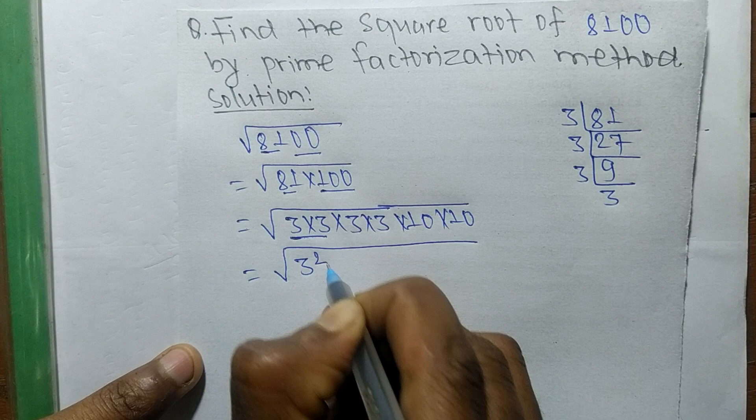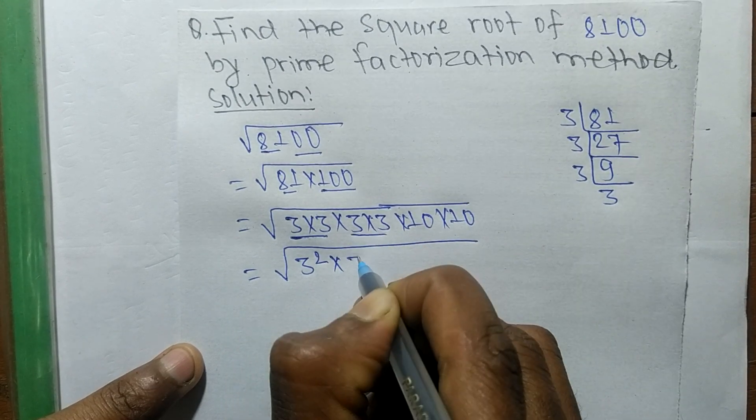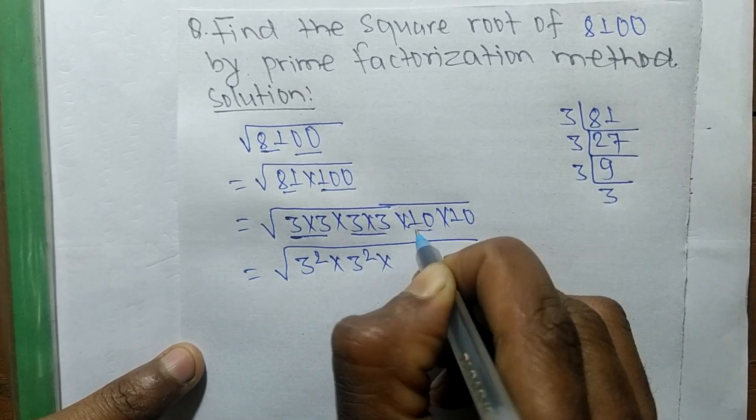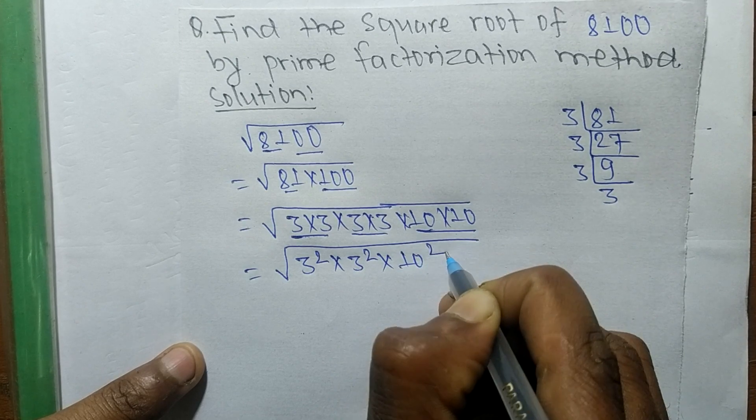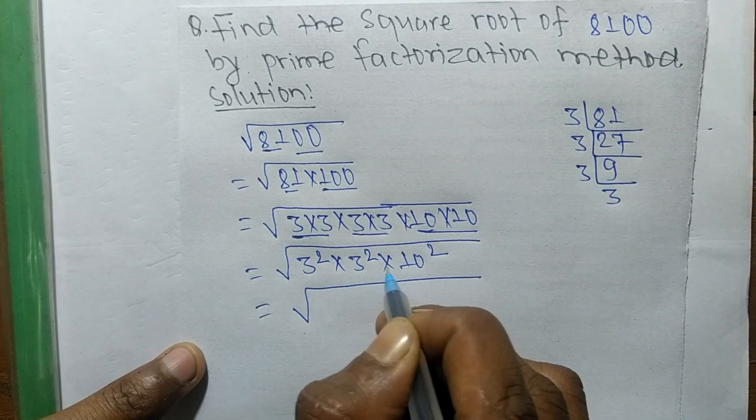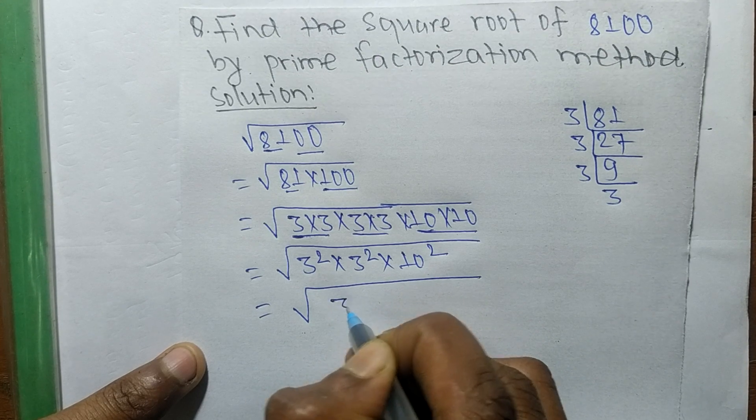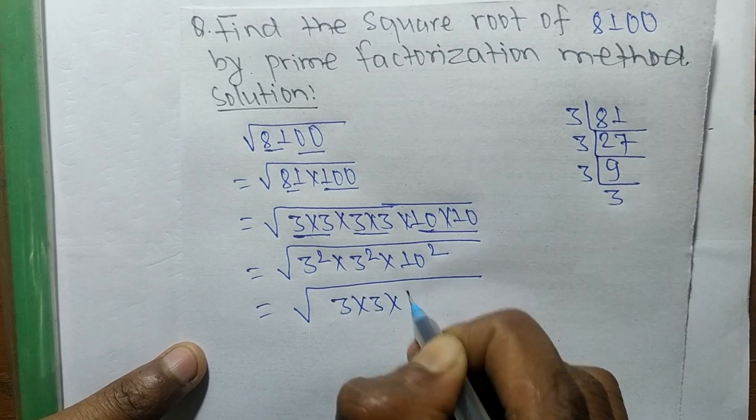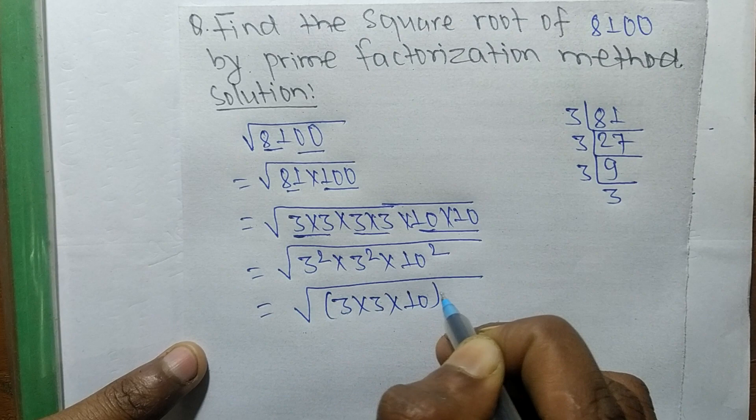So 3 into 3 is 3 squared, 3 into 3 is 3 squared, and 10 into 10 is 10 squared. As you can see, a square is present in all, so we take square as a common, so it becomes a whole square.